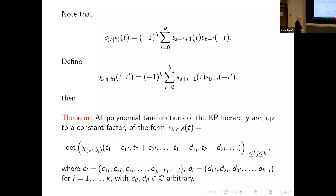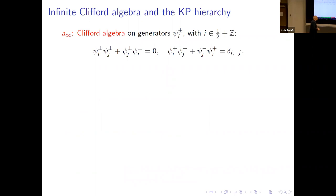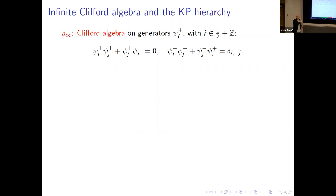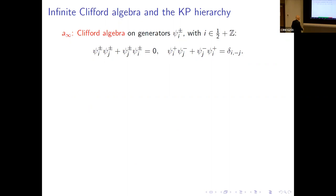Let me sketch how you get KP from Clifford algebra and how you could prove this theorem. In this paper from four years ago with Victor Katz, we also looked at all the Gel'fand-Dickey tau functions and have some formula for all of them. It's similar — in this Jacobi-Trudy form — but there were restrictions on the constants and on the possible lambdas that are allowed.